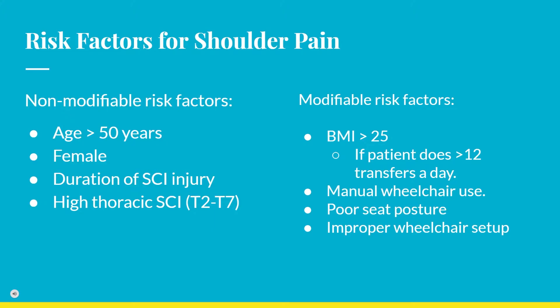Modifiable risk factors for shoulder pain in SCI patients include manual wheelchair use, poor seated posture, improper wheelchair setup, and a BMI over 25. The study found no correlation between shoulder pain and BMI if BMI was evaluated alone, but BMI becomes a significant risk factor if the subject does more than 12 transfers per day.